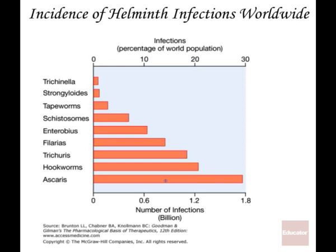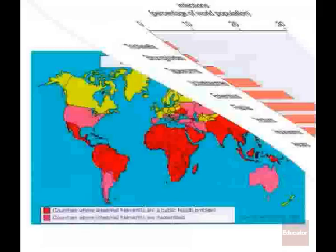Here is the worldwide incidence of helminth infections. You can see there's quite a large number of people who are infected, and again, these are known infections. A lot of individuals have these parasites and they don't know it. In order for us to record the incidence, we have to be able to confirm whether or not these individuals are cases. So these are known infections, and there's probably at least as many, if not many more, that are not known.